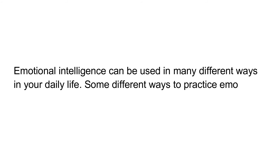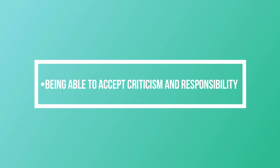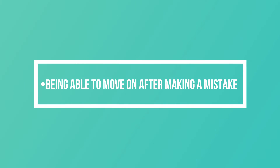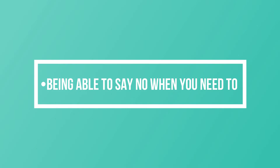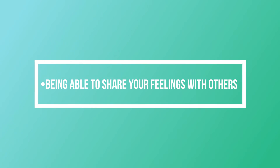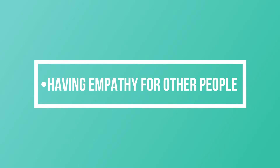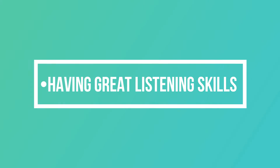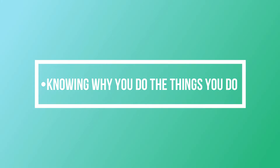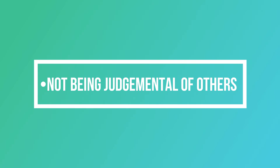Emotional intelligence can be used in many different ways in your daily life. Some different ways to practice emotional intelligence include: being able to accept criticism and responsibility; being able to move on after making a mistake; being able to say no when you need to; being able to share your feelings with others; being able to solve problems in ways that work for everyone; having empathy for other people; having great listening skills; and knowing why you do the things you do.